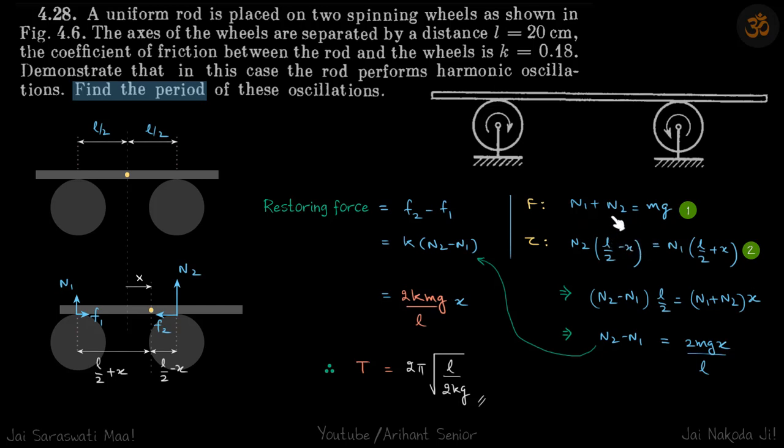We are not going to find the values of n1 and n2 separately, because we only need the value of n2 minus n1. If you take this value on that side, you will get the term n2 minus n1 times l by 2, and taking minus n2 x to that side gives n1 plus n2 into x. The value of n1 plus n2 is mg, so we get n2 minus n1 equals 2mgx by l. This is just a procedure to reduce our calculations—even though we have two equations and two variables, we don't need to find n1 and n2, we only need n2 minus n1.